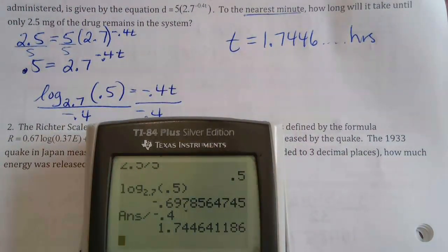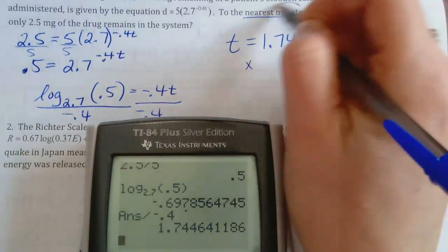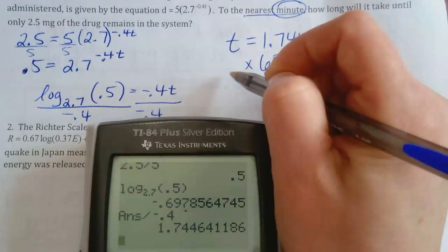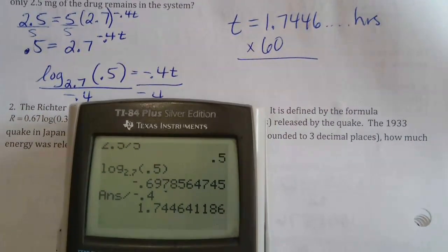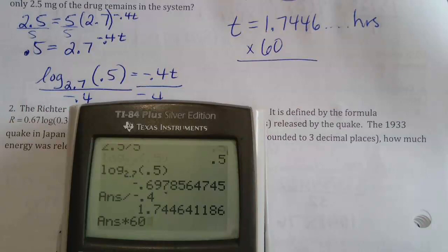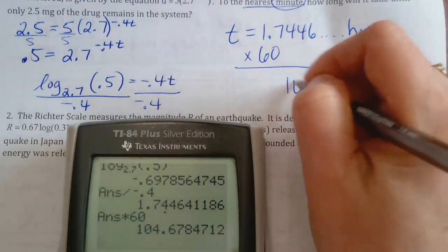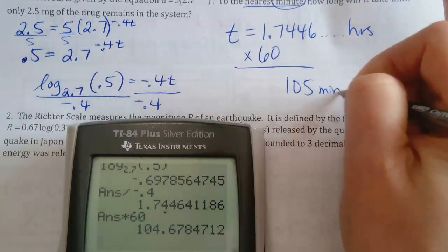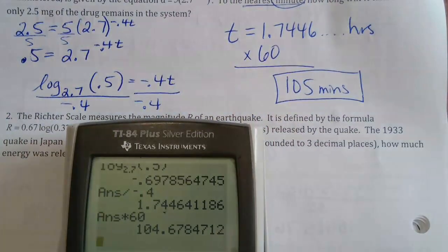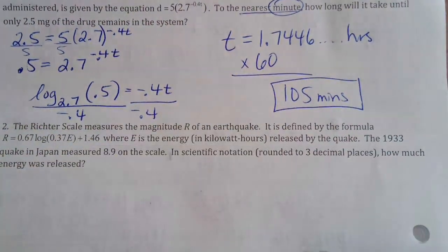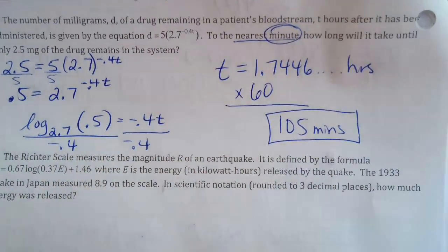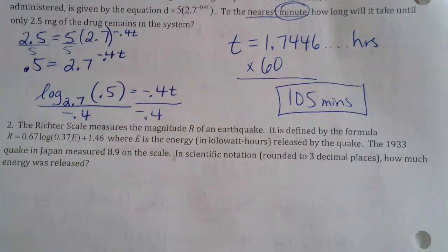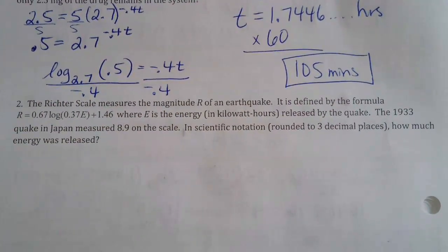We need to convert to minutes since that's what the problem wants. Multiply by 60 minutes per hour, and that gives us approximately 105 minutes as our final answer. The only reason we're converting is that the answer was in hours but the problem asked for minutes.